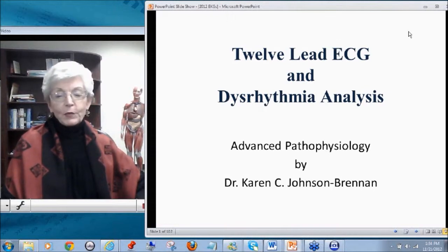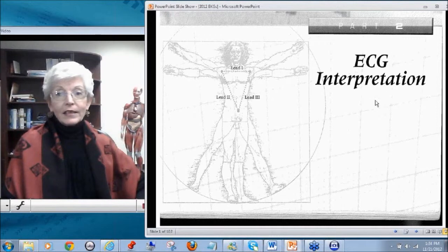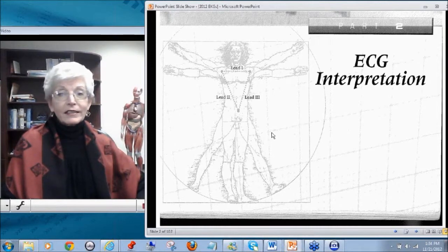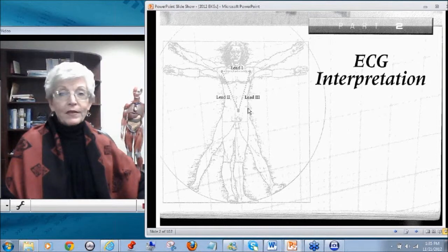Hello. Welcome to Advanced Pathophysiology and we are now going to discuss the 12-lead EKG and dysrhythmia analysis. This is ECG interpretation and this particular da Vinci diagram is literally very important because it shows Eindhoven's triangle superimposed upon the gentleman which are our major limb leads.